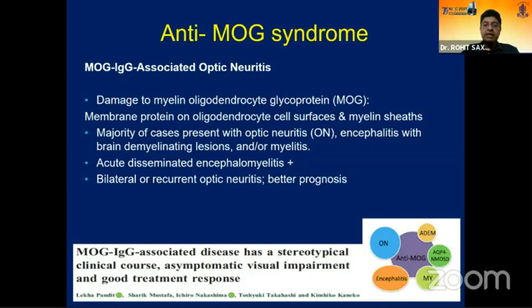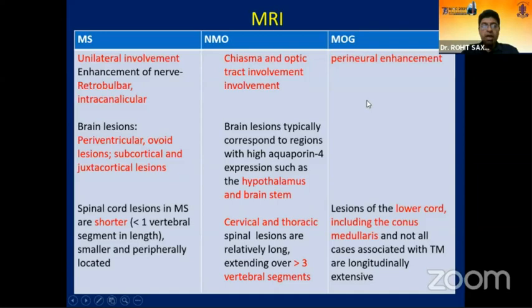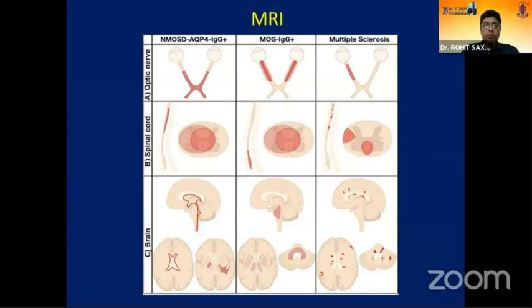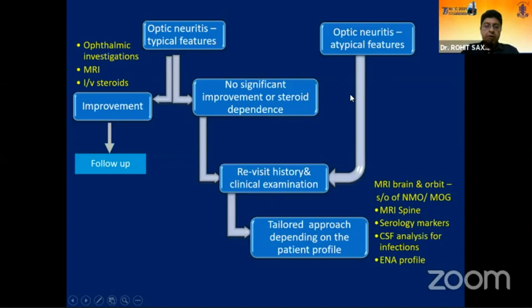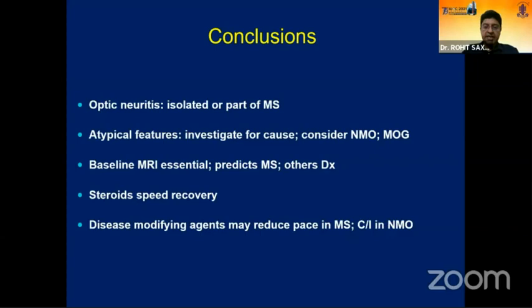MOG syndrome is seen frequently, presenting in a more benign form compared to NMO but with much higher recurrence rates. On MRI, MS typically shows unilateral involvement while MOG shows chiasmal, bilateral, or perineural involvement. Get blood tests for NMO and MOG antibodies to identify the disease early. In summary: for typical optic neuritis, give IV methylprednisolone and follow up. If no improvement or steroid dependence, investigate for atypical features, test for NMO and MOG, do MRI spine, and tailor management — interferons or disease-modifying agents for MS; immunosuppressors for NMO/MOG.